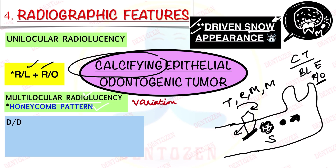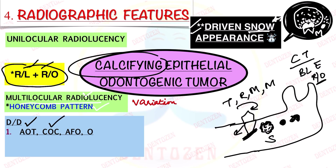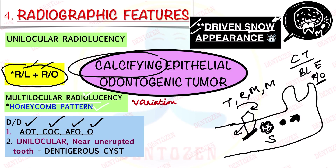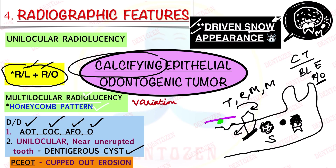If the lesion presents as a mixed radiolucent-radiopaque appearance, it can resemble adenomatoid odontogenic tumor, calcifying odontogenic cyst, ameloblastic fibrodontoma, and odontoma. But if it is a complete radiolucency near an unerupted tooth, it can resemble a dentigerous cyst. The peripheral CEOT present in the gingiva can sometimes cause superficial erosion of the bone, termed 'cupped-out erosion.'